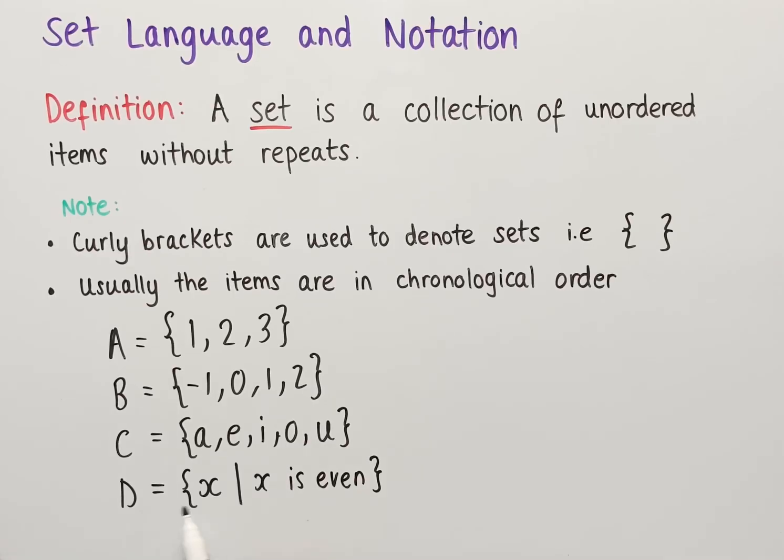This set means that we have any number such that that number is even. For instance, in this set we could have the number 2, we could have 4, we could have 6, and so on. So this set would contain all of the even numbers.